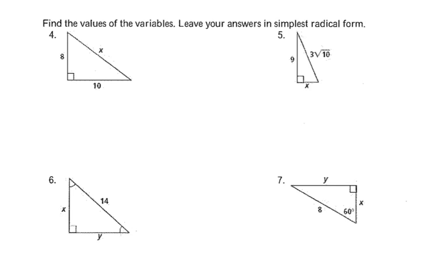I'm going to start you off — I'd like you to start with numbers 6 and 7. If you could please answer 6 and 7, please put it in simplest radical form, and when you're ready, please unpause the video.